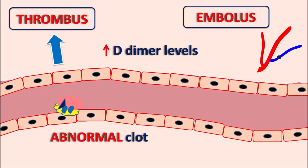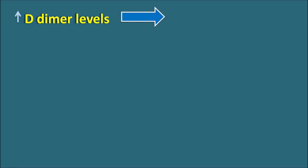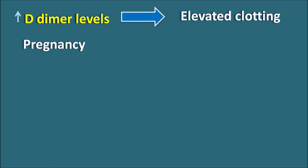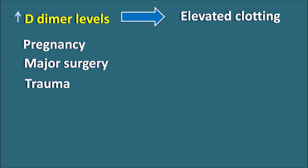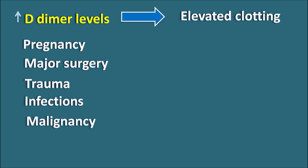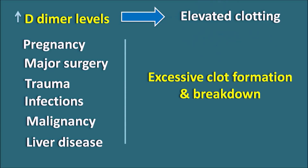That is why the D-dimer test is useful to check for thrombus and embolus formation in susceptible patients. D-dimer levels can also be increased in other conditions with elevated clotting: during pregnancy there is more formation of clotting factors; after major surgical procedures there is a chance of excessive clotting; trauma or head injury may also elevate D-dimer levels; certain viral infections can increase blood clotting; malignancy (any cancer) can also increase clotting; and patients with liver disease can also be affected with elevated D-dimer levels.